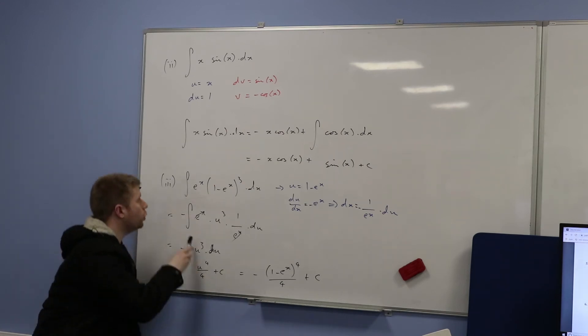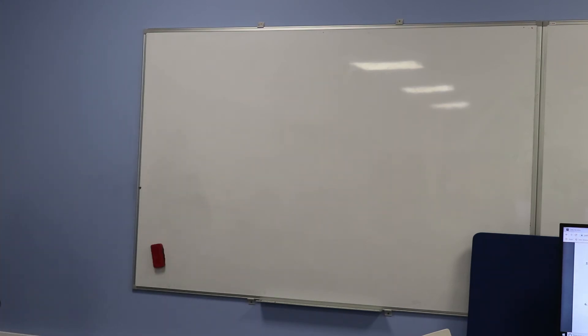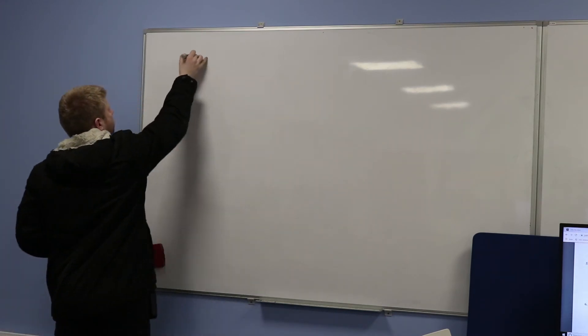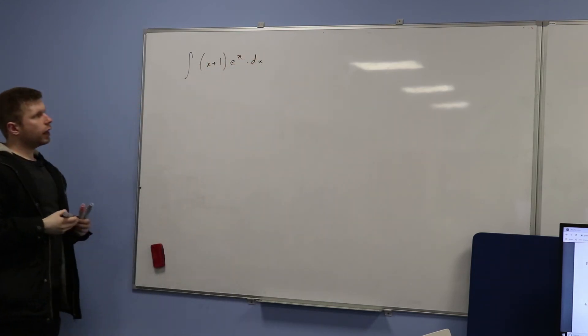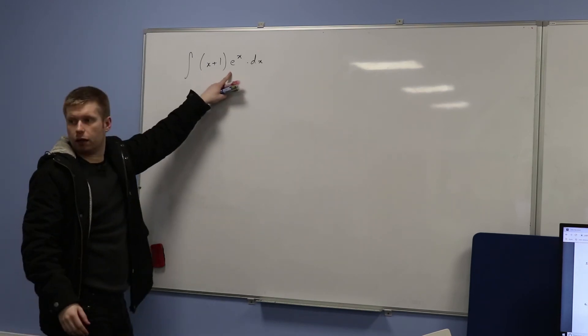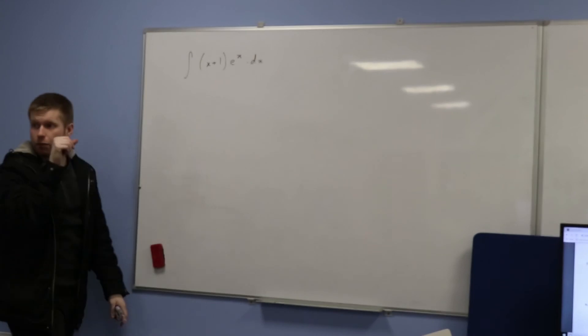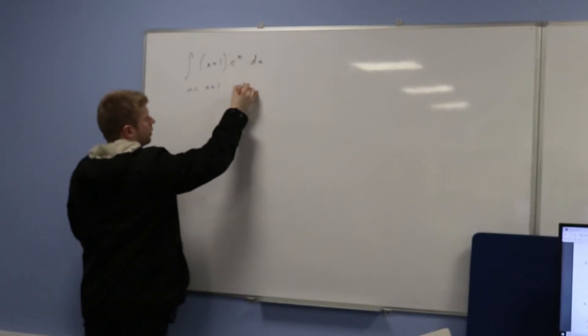So don't automatically assume that because you have the product of two functions you need to use integration by parts — it's not always the case. Now let's look at the next one: the integral of (x + 1)·eˣ with respect to x. You could use integration by parts directly, or you might find it slightly easier to expand to x·eˣ + eˣ first. Let's just do it as is: let u equal (x + 1) and let dv equal eˣ.